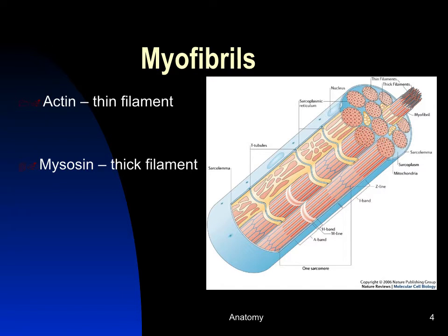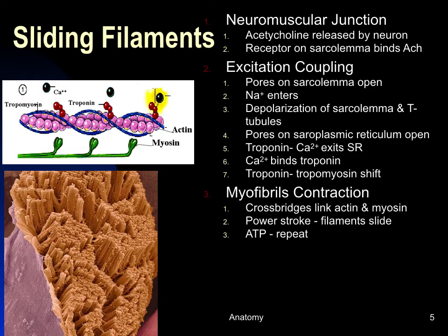These filaments are what shorten when the muscle cell contracts. Contraction begins with the nerve cell, which releases a neurotransmitter at the neuromuscular junction. For skeletal muscle cells, the neurotransmitter is always acetylcholine. Acetylcholine binds to a receptor on the sarcolemma, causing ion channels to open that allow sodium ions to enter the cell, producing a depolarization that spreads over the sarcolemma and into the t-tubules.